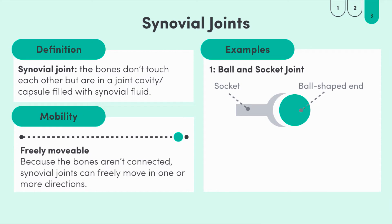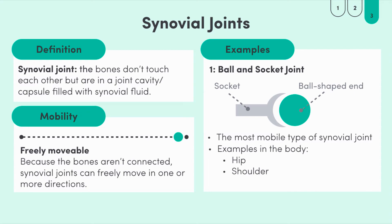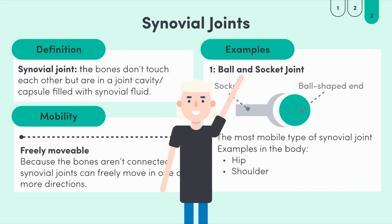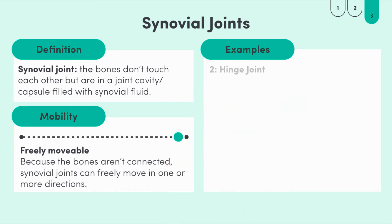The ball and socket joint has the highest freedom of movement because of its structure — the bone can virtually move in any direction. As humans we only have two ball and socket joints in our bodies: the hip and shoulder joints. Try moving your arm in any direction and you should be able to see that there's not a lot of restriction in the shoulder joint, and that's because of its unique structure.